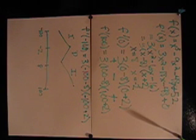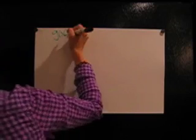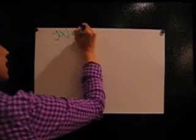The next example, we're going to do for the first derivative test is going to be g of x is equal to x cubed.